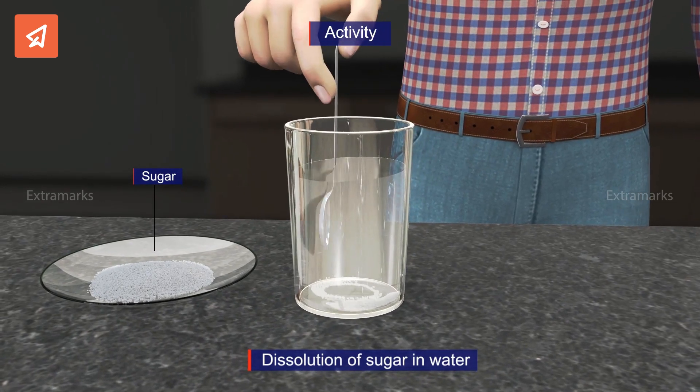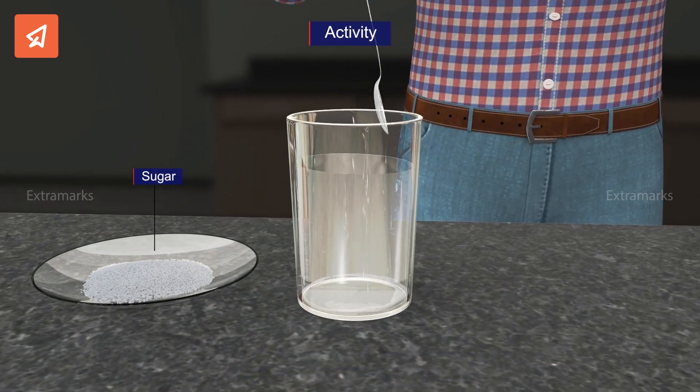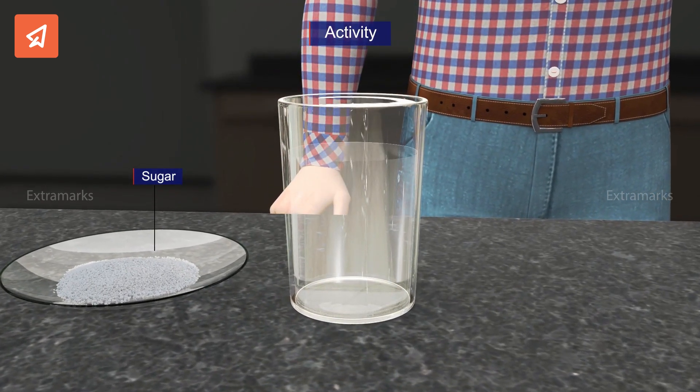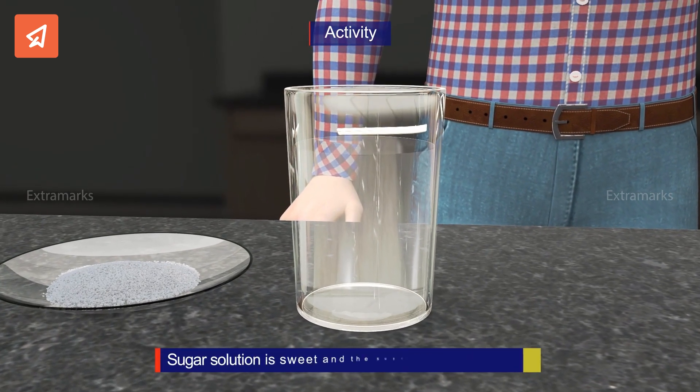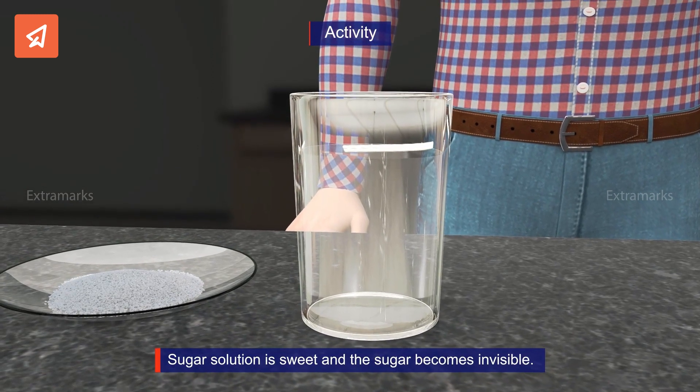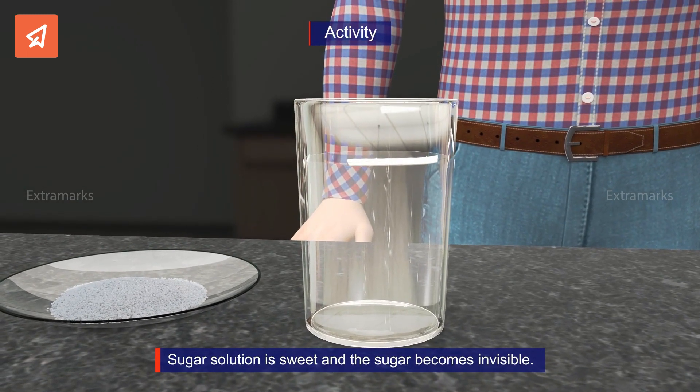At first, we see tiny sugar particles continuously moving in water. But gradually, they dissolve in water, forming a clear sugar solution. We get a sweet sugar solution at the end, which cannot be seen by us.